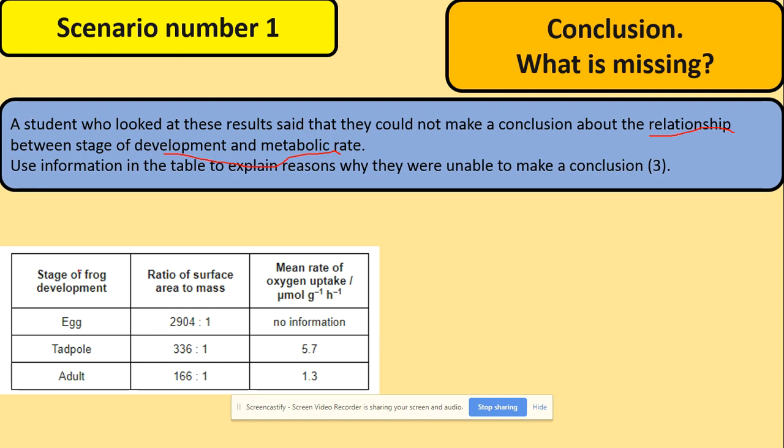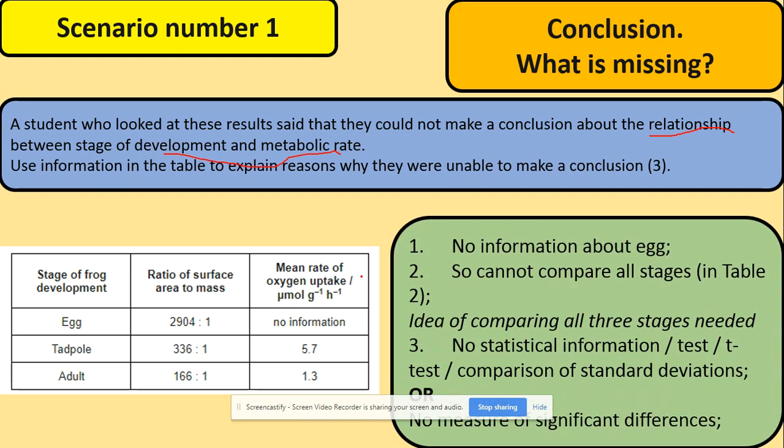They weren't able to make conclusions on the relationship and the development and metabolic stages. So what's missing here? With what we've got in the table, we've got stage of development, we've got a ratio and we've got the mean rate, and some of them don't even have information.